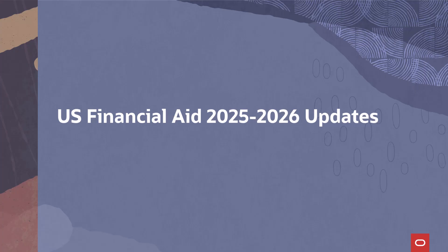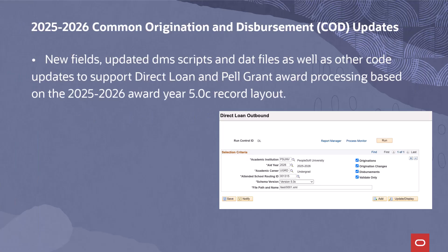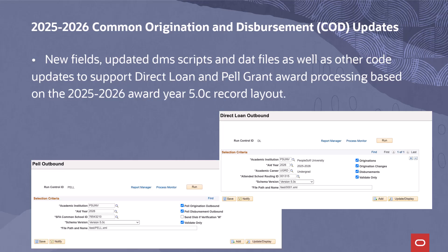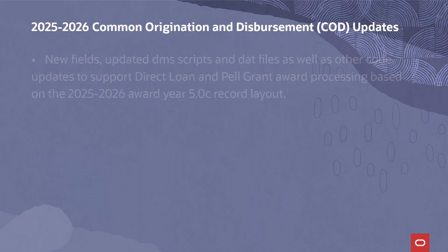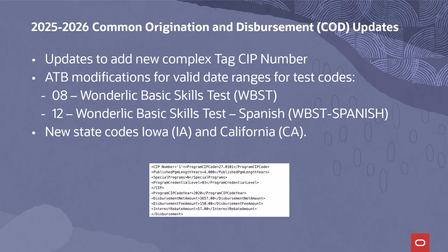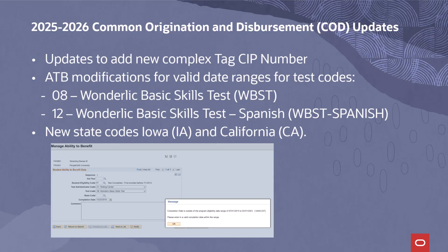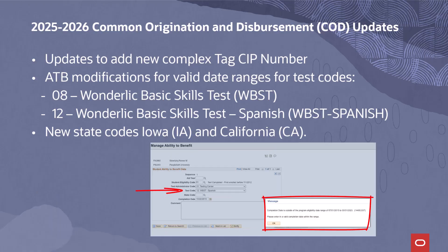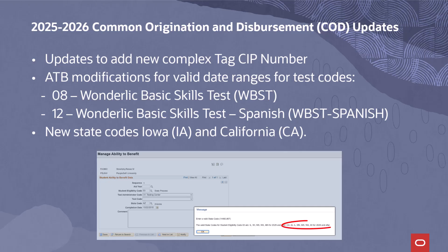For US Financial Aid 2025-2026 updates, we have delivered new fields, updated DMS scripts and DAT files, as well as other code updates to support direct loan and Pell grant award processing based on the 2025-2026 award year 5.0c record layout. Updates have been delivered to add a new complex tag, CRP number, and related changes. ATP related modifications include updated valid date ranges for test code 08, Wunderlich Basic Skills Test (WBST), and Wunderlich Basic Skills Test Spanish (WBST Spanish), and new state codes of Iowa (IA) and California (CA).